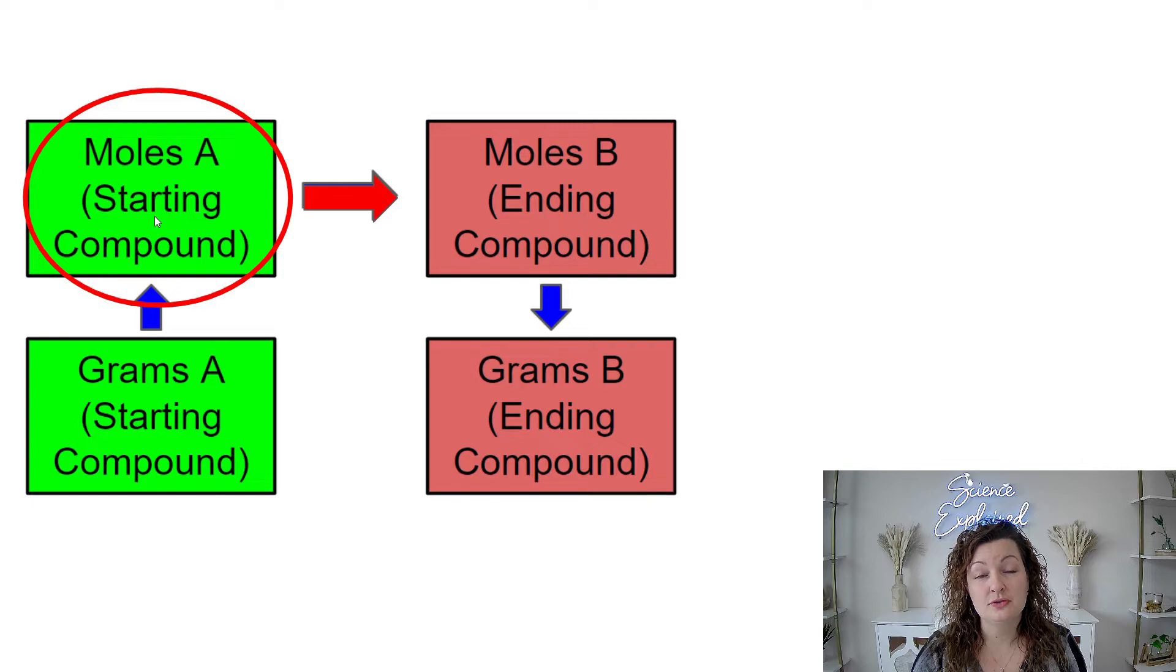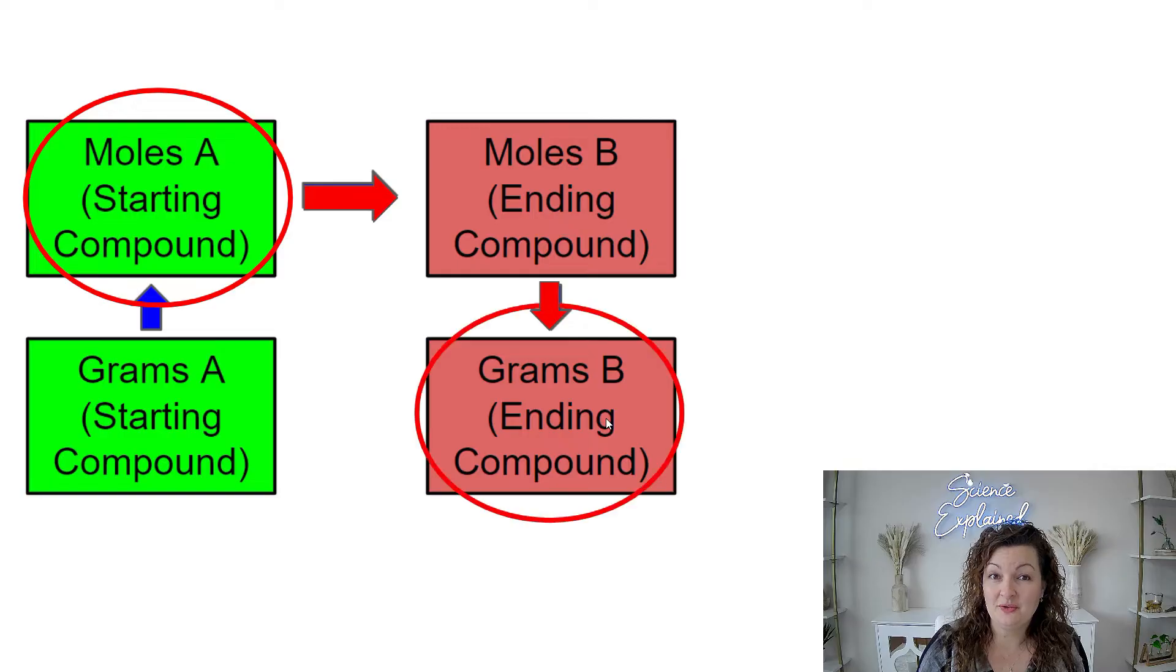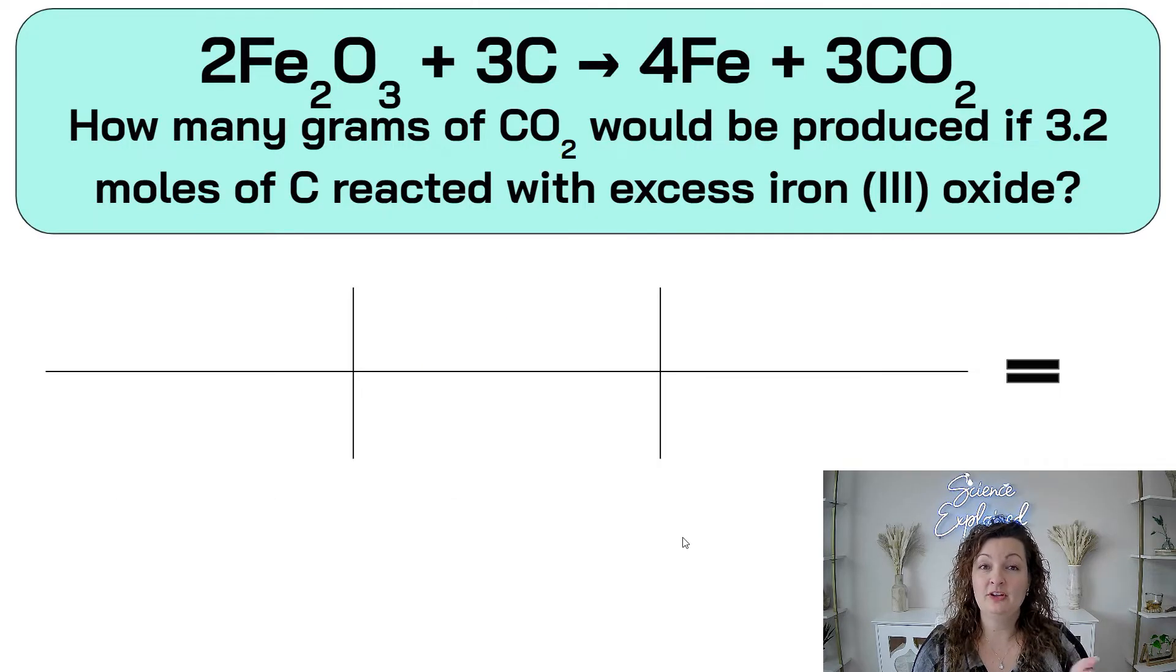And then we're going to transfer that to moles of the compound that we want to finish with, and then convert that to grams of our ending compound or element, whichever one the question asks for. So notice we are passing through two arrows, which means we have two T's in our bridge. In other words, this is a two-step problem. So you can fill out your bridge accordingly with those two T's and make sure that we don't miss anything.